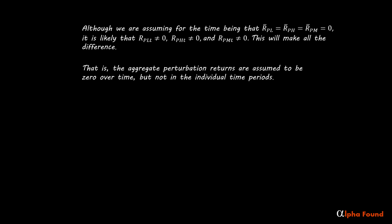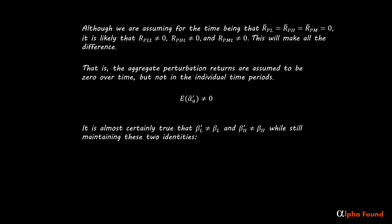That is, the aggregate perturbation returns are assumed to be zero over time, but not in the individual time periods. It will be demonstrated in the next couple of videos that alpha has an expectation different from zero, usually. We are now entering into the weeds of the model and will remain there for the rest of the videos. The notation is often subtle. It is almost certainly true that CAPM beta is not equal to ideal beta, while still maintaining these two identities.